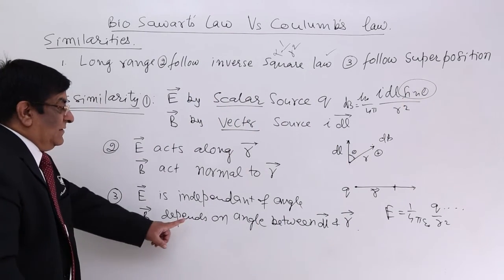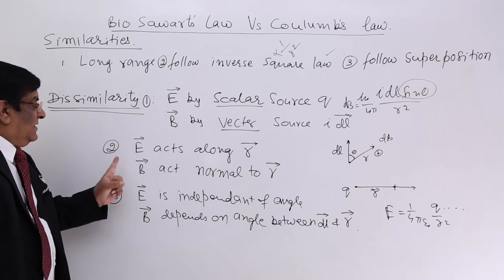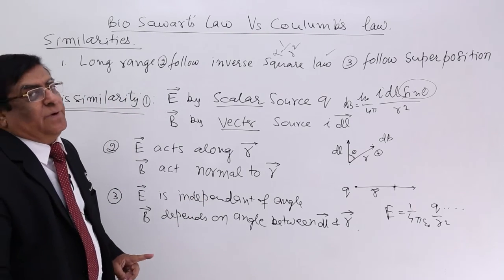This is the difference. B depends upon angle. E is independent of the angle. So you must remember these are the three differences between the two.